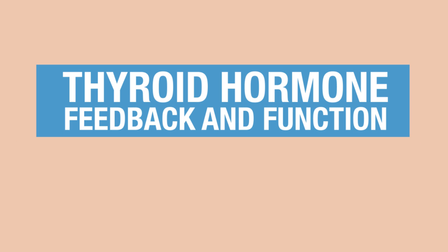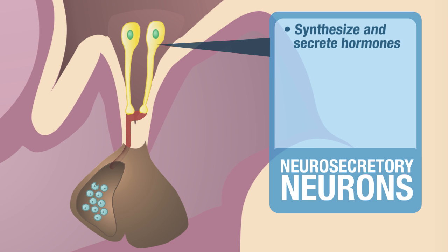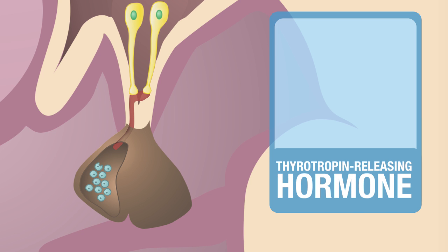In this segment, we will learn how thyroid hormone is synthesized and secreted and how that synthesis and secretion can be turned off. Let's begin with the hypothalamus. These neurosecretory neurons will synthesize and secrete hormones, and these hormones can travel to the anterior pituitary. With the thyroid hormone feedback loop, the neurosecretory neurons will synthesize and secrete a hormone called thyrotropin-releasing hormone.